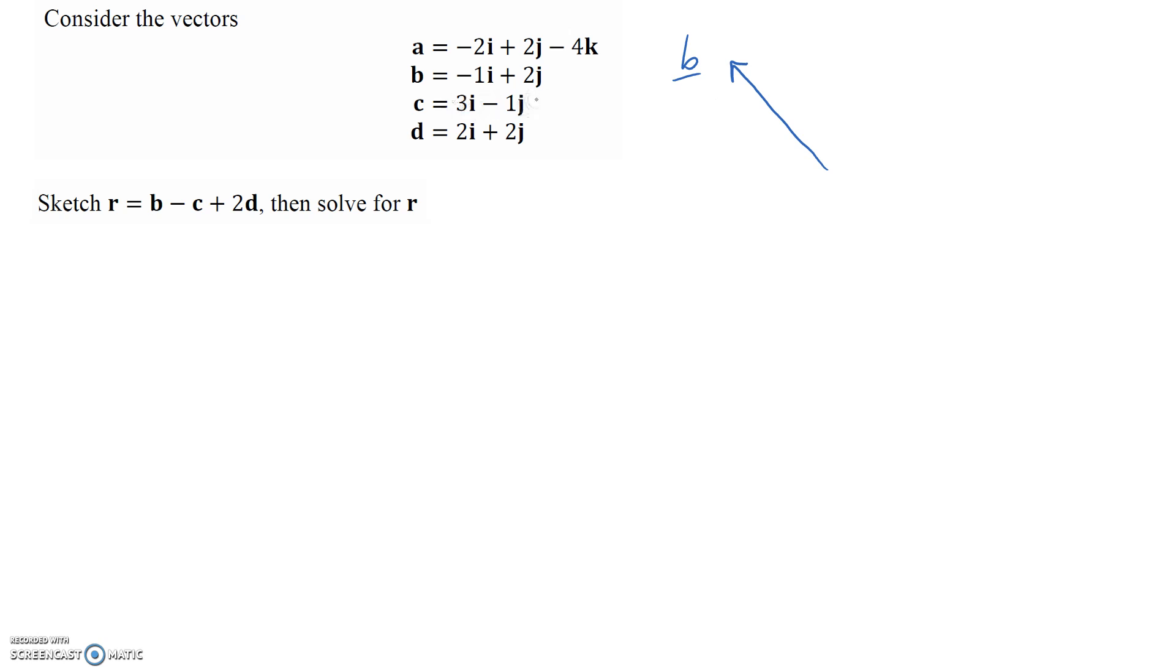The next one is c: 3i minus 1j. It's going in the positive x direction and then down a little bit in the y direction, so it looks like this. That's my vector c.